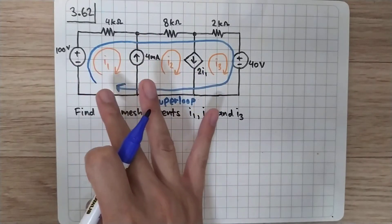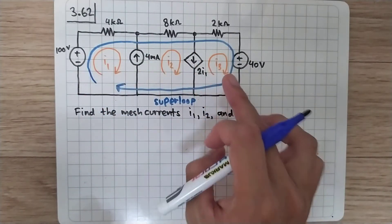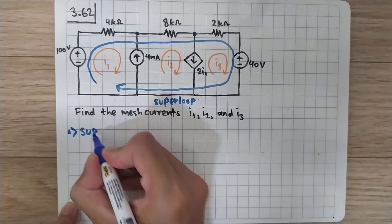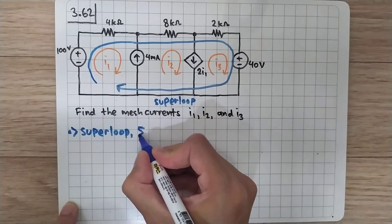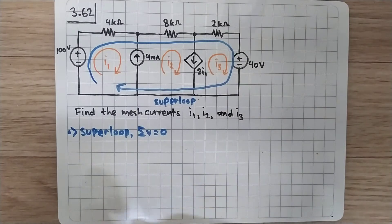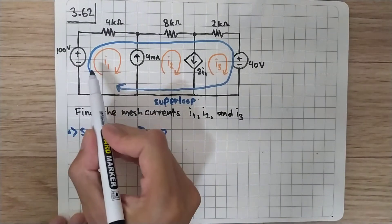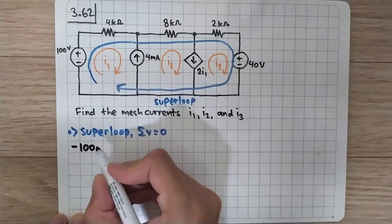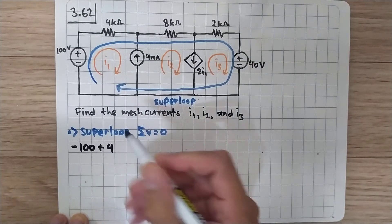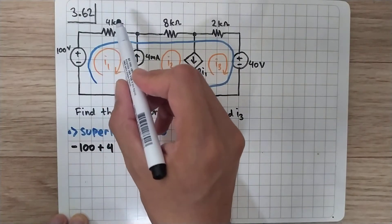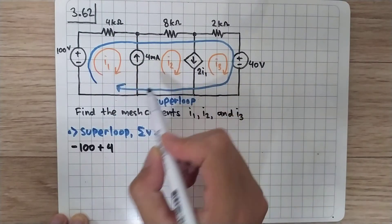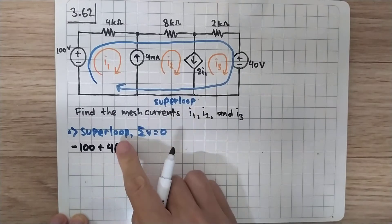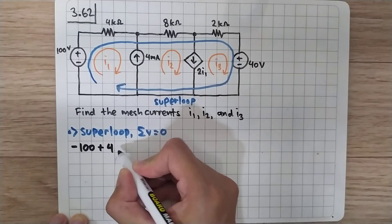We cannot do analysis at i1, i2, or i3 individually because all of them contain a current source. So we will start analysis at the super loop. Using KVL, the sum of voltages in a loop equals zero. Starting from the voltage source, the current flows from negative to positive so the sign is negative, and the value is 100. Moving on to the 4 kilo-ohm resistor, the only current passing through it is i1, so we multiply 4 by i1.